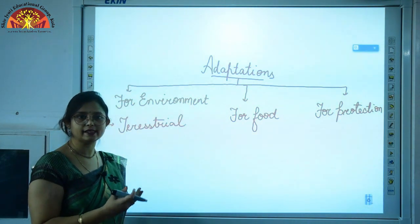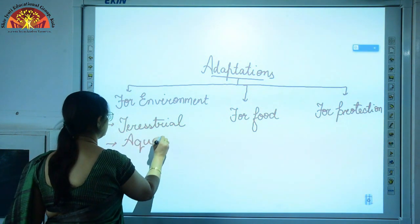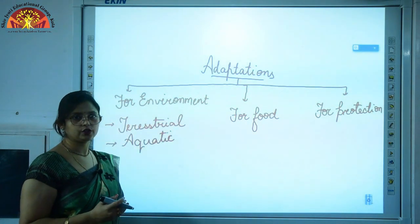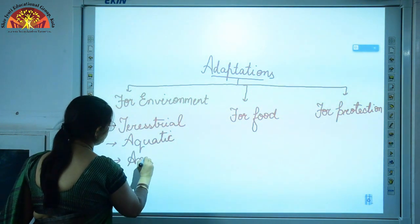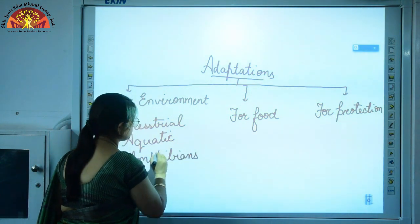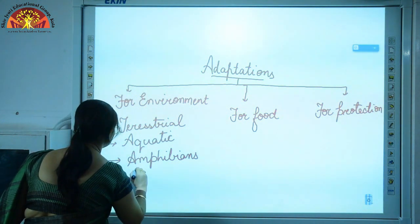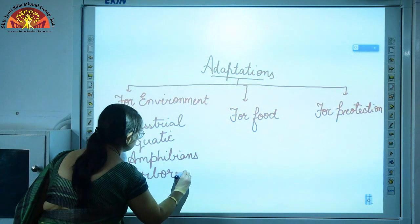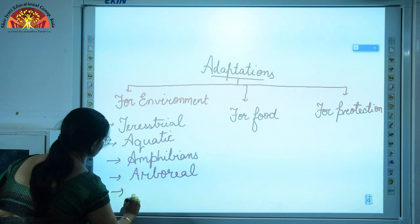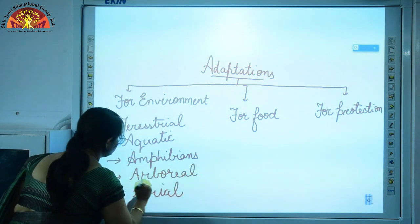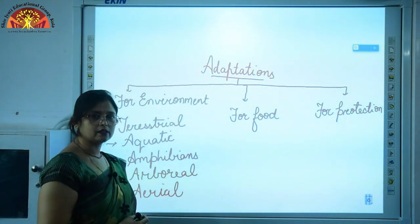Among terrestrial animals, some live in hot deserts like camel and some live in cold regions like polar bear. The second type is aquatic habitat — some animals live in water whether freshwater or sea water, like fish and shark. Third type is amphibians, adapted to live on land as well as in water, like frogs and salamander. Fourth is arboreal — animals which spend most of their time on trees like monkeys and squirrel. The last category is aerial — animals which spend most of their time flying in the sky like birds. These we have already discussed in our previous video in detail.